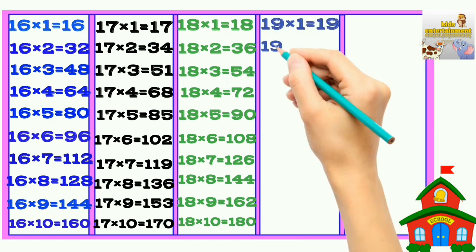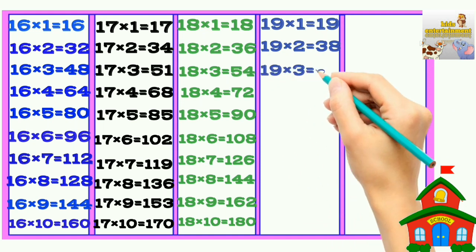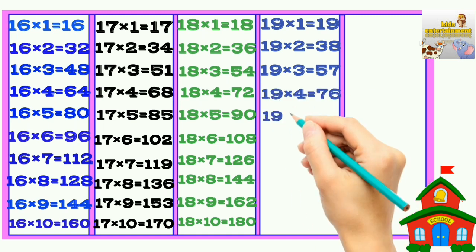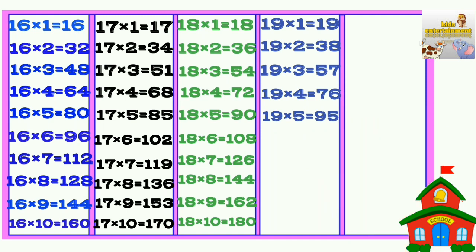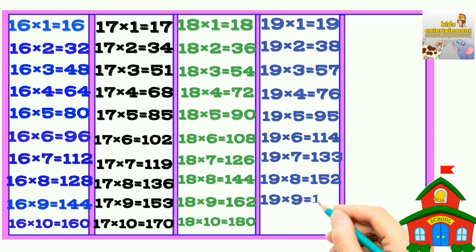19 times 1 is 19, 19 times 2 is 38, 19 times 3 is 57, 19 times 4 is 76, 19 times 5 is 95, 19 times 6 is 114, 19 times 7 is 133, 19 times 8 is 152, 19 times 9 is 171, 19 times 10 is 190.